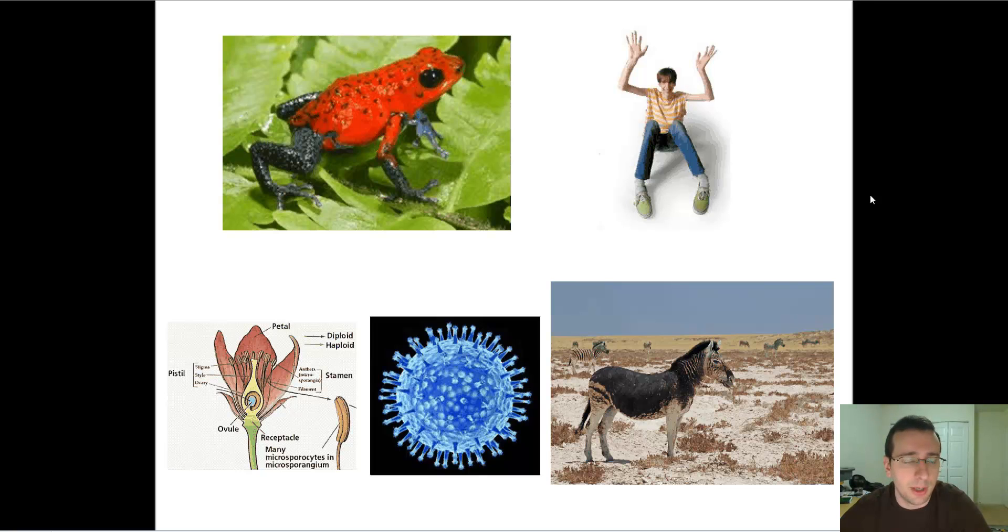This is something we already talked about when we discussed aposematic coloration. In the last video, we mentioned that there needs to be enough of these organisms that look strange in order for the message to get across to the predator, which is why things like Mullerian mimicry evolved, because there's an advantage if more than one organism works together to send a message.